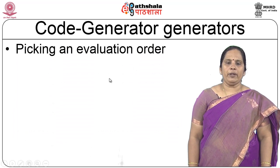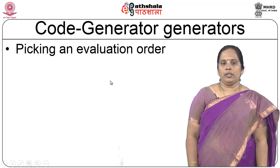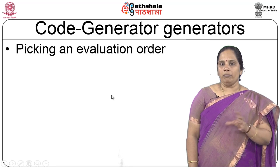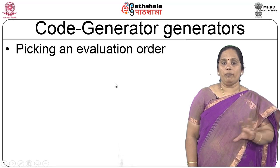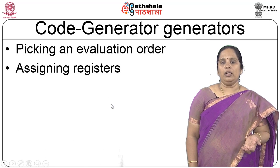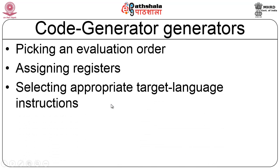So far, the code generation algorithms use an evaluation order by rearranging statements or some heuristic reordering. Then they assign registers for particular variables and instructions, and select an appropriate target language instruction set to finally generate code corresponding to every three address code available.